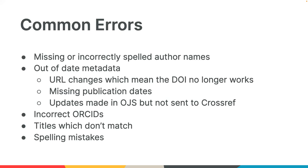Everything doesn't always go as expected — people make mistakes, there's error in metadata, it's bound to happen even for the most careful users. The most common metadata errors our technical team reports: authors contact us stating their names are missing or incorrect; content has moved and URLs haven't been updated, causing DOIs to fail; changes made in OJS that were never pushed forward to Crossref and so never registered with us; authors reporting an incorrect ORCID registered for them; and of course spelling and typographical errors, which can also be corrected.